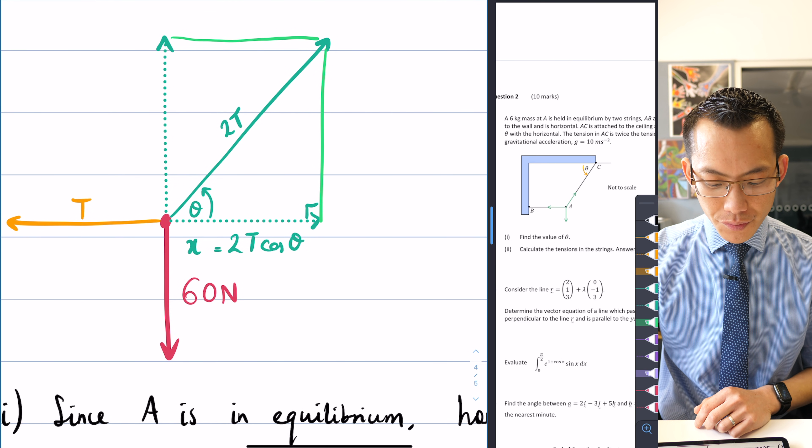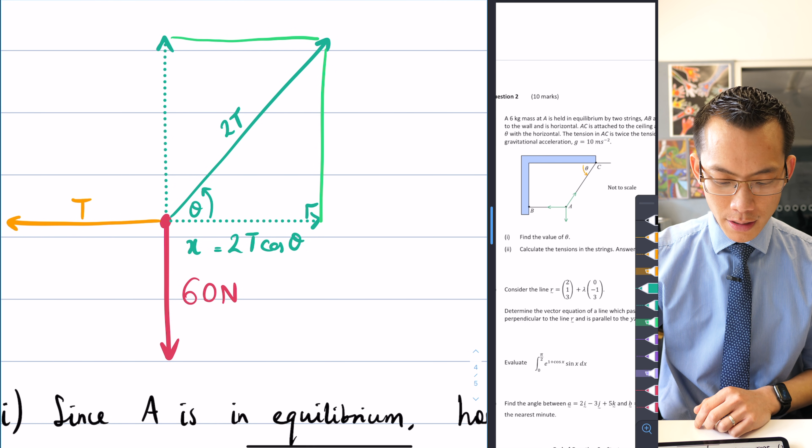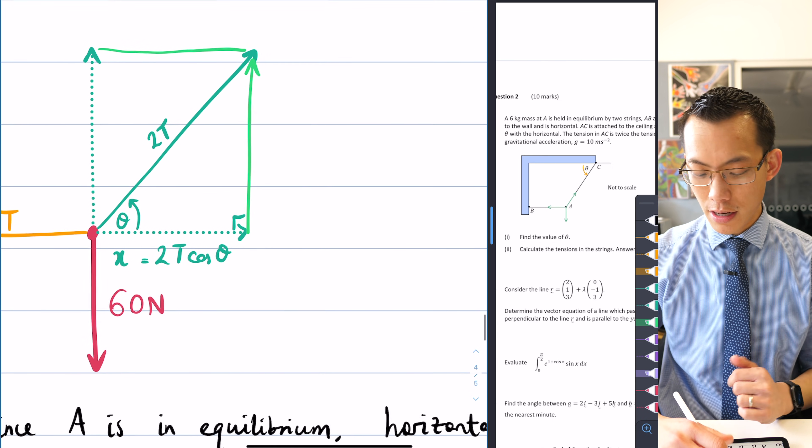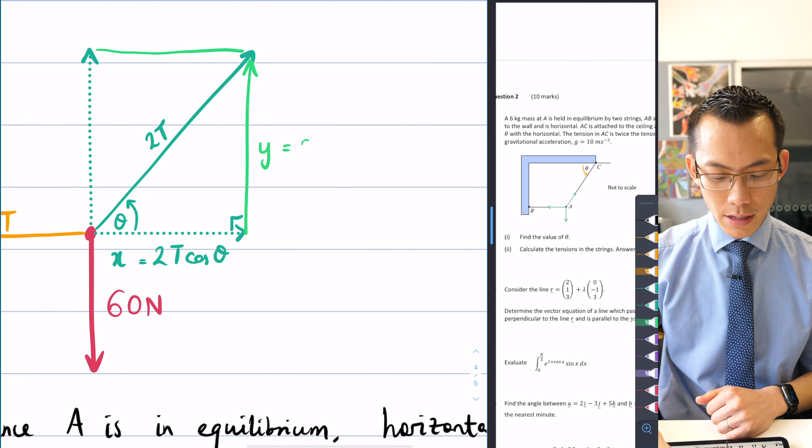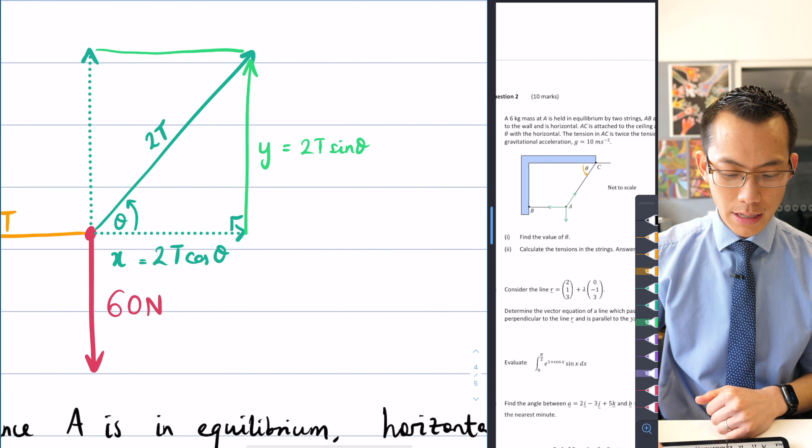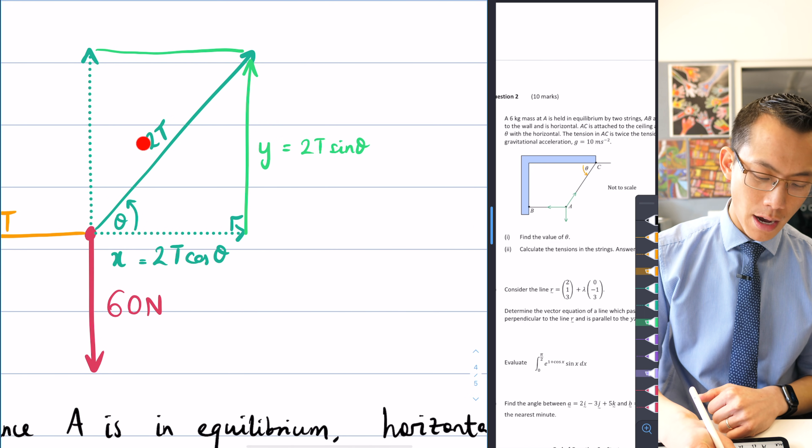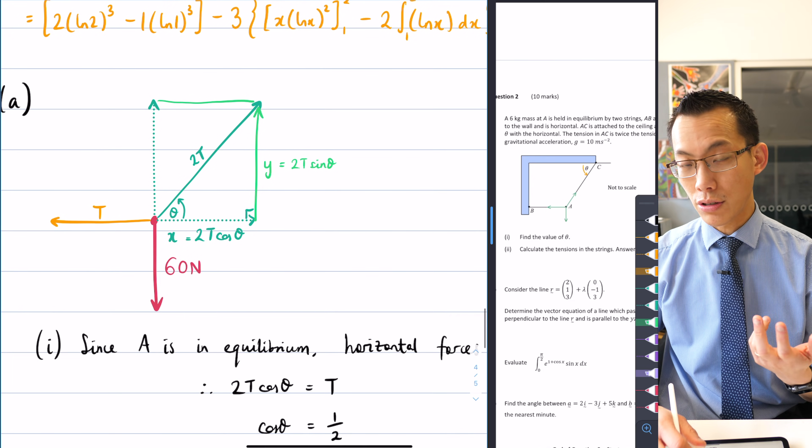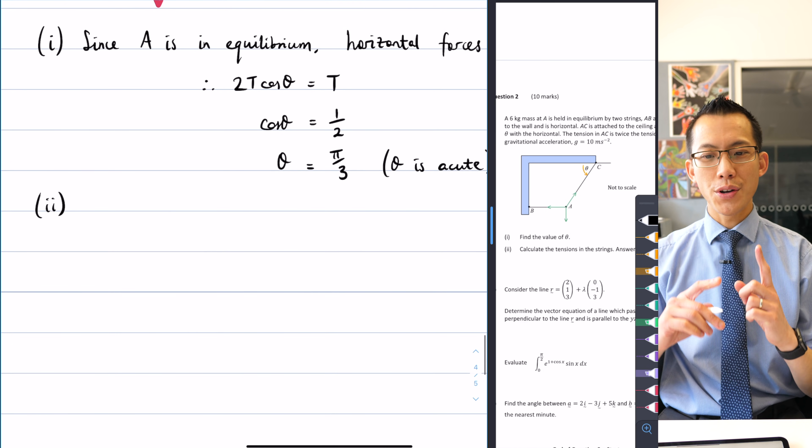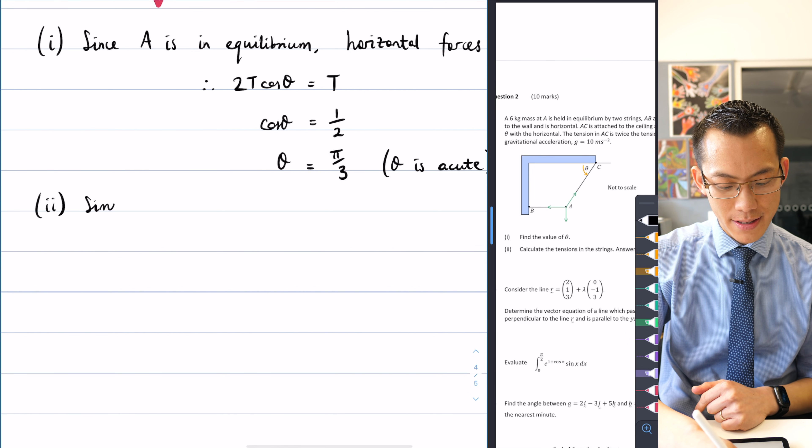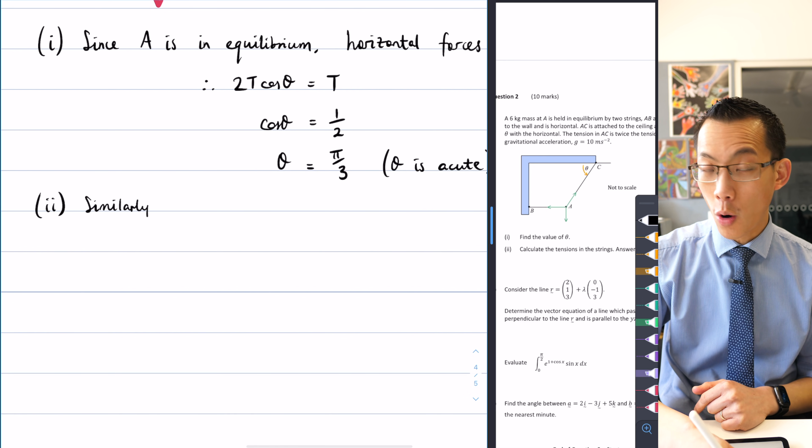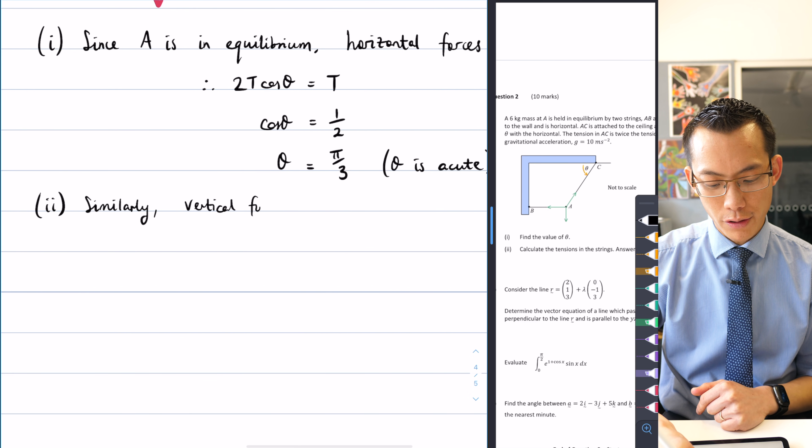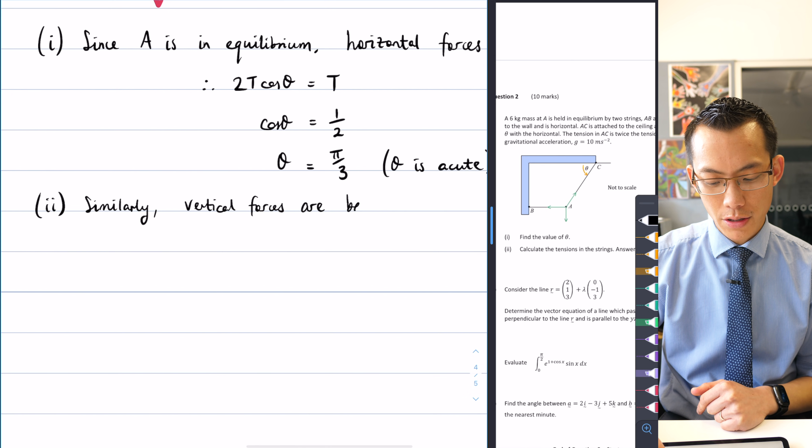This length here in this right-angled triangle, just like I had 2t cos theta before, this vertical length is 2t sine theta because it is opposite and then there's the hypotenuse. So if this is 2t sine theta, so is this, which is the force that's actually acting on the particle. Similarly, I can say the vertical forces are balanced because we're in equilibrium.